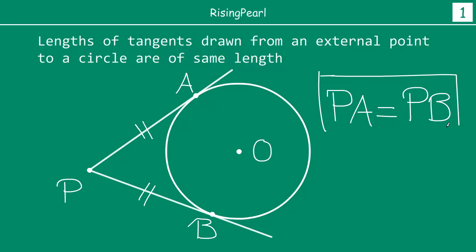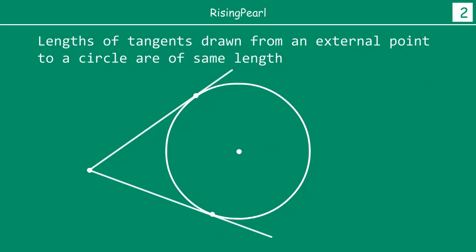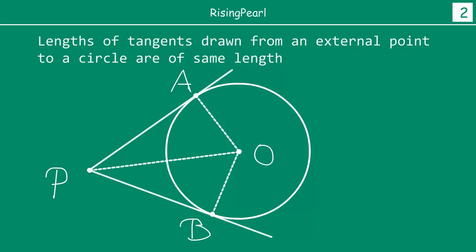This is a very important theorem and as we start to solve questions on circles and tangents, you will make use of this almost always. So let's find out how we prove this. Here we have our circle with center O, the external point P, and points A and B. We are going to join OA, OB, and OP.